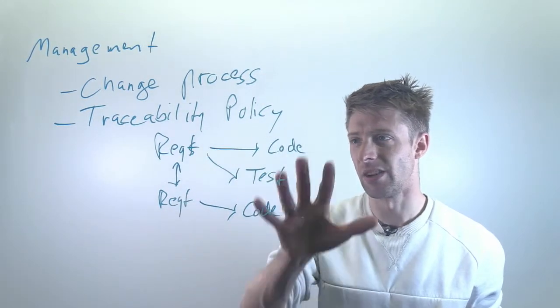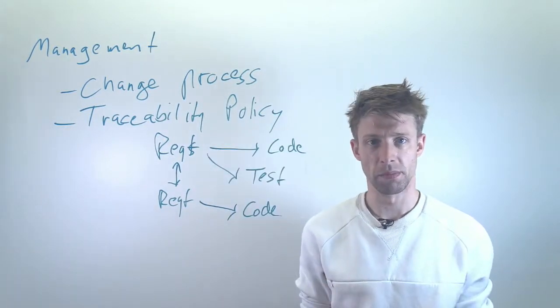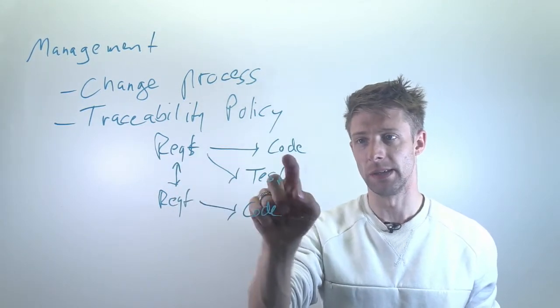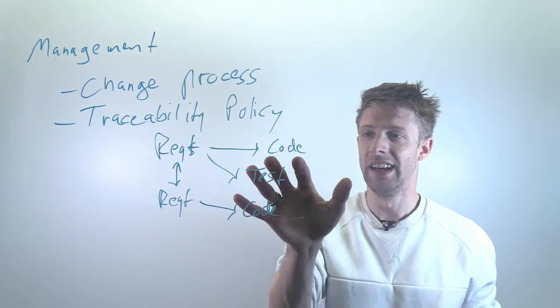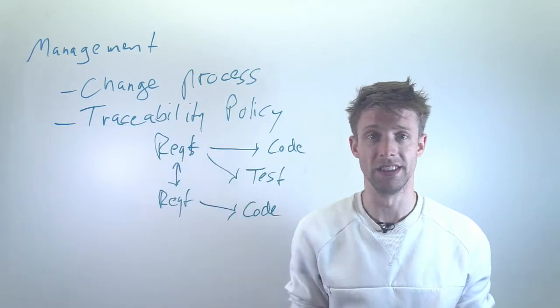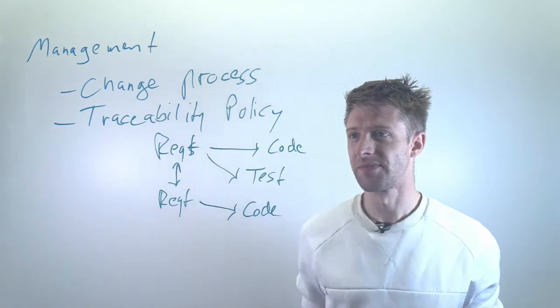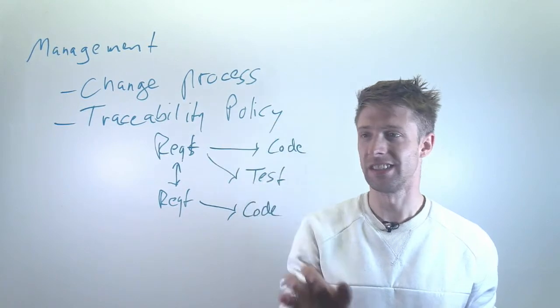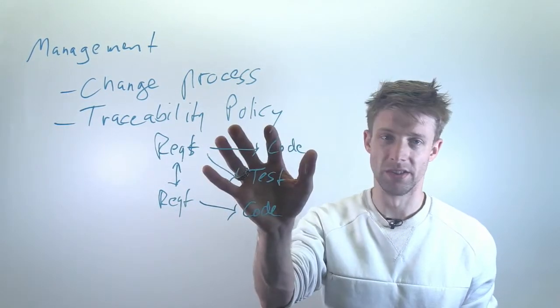So essentially this is all about understanding how things are connected. And in an organization you need to have some kind of policy of how to do this. For example, do we need connections between requirements and code? Then you have to somehow tell the developers to do this. You also have to give them access that they can actually for example touch the requirements in the requirements management tool. So it's all about having a policy and that has to do of course with requirements, with regulations.